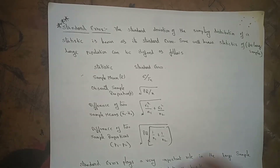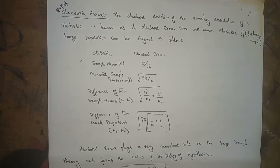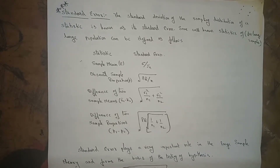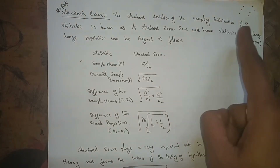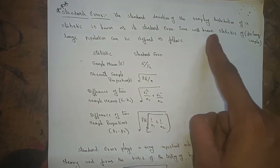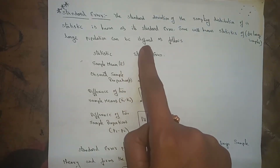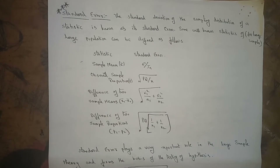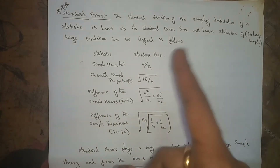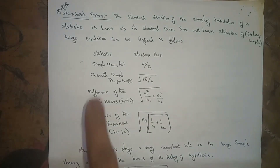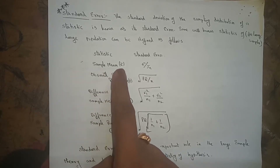The next definition is standard error — very, very important. The standard deviation of the sampling distribution of a statistic is known as its standard error. Some well-known statistics of large populations can be defined as follows. These are all for large samples, meaning sample size is greater than 30. The statistic sample mean is denoted with x-bar.